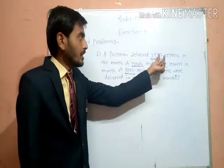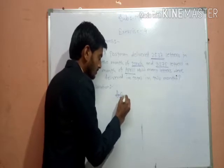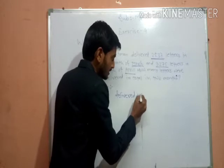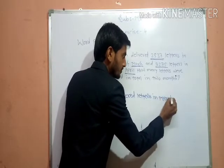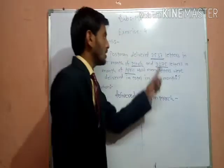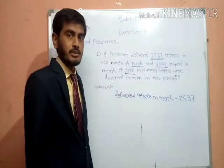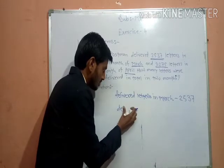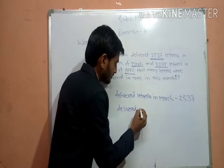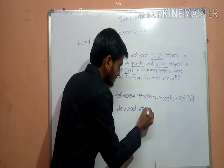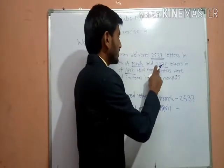It means add both the numbers. Write: postman delivered letters in March — 2,537. Next, how many letters were delivered in April? Letters delivered in April — 3,275.